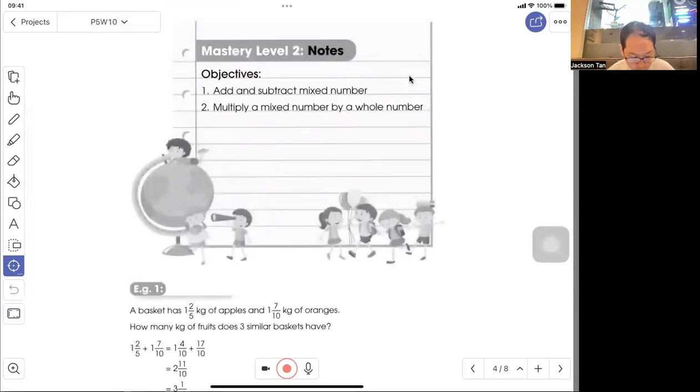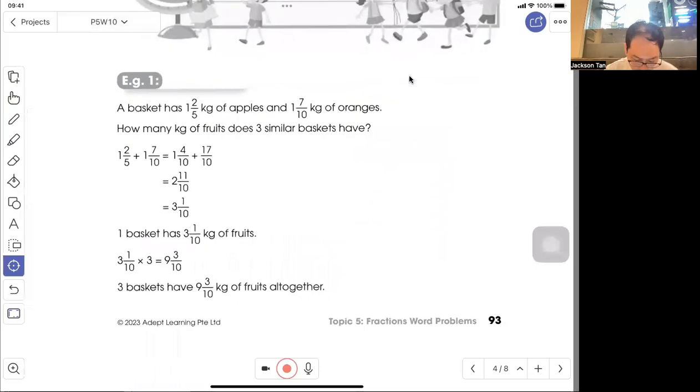Mastery Level 2: The objective is to add and subtract mixed numbers and multiply mixed numbers by a whole number. A basket has 1 2/5 kg of apples and 1 7/10 kg of oranges. How many kg of fruit do 3 similar baskets have? First, add the apples and oranges. Make sure the denominator is the same.